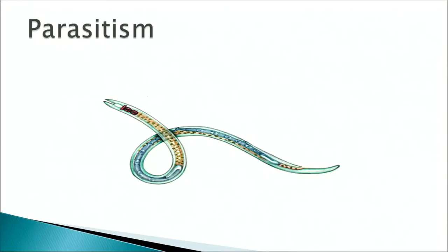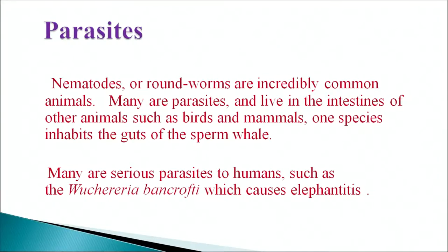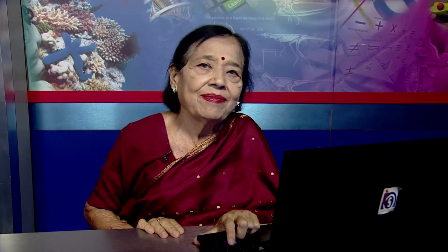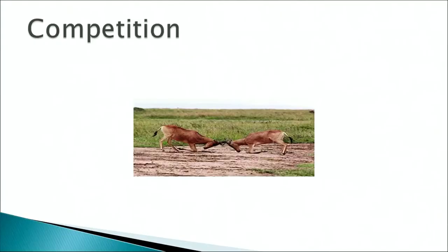Parasitism: parasites such as nematodes or roundworms are incredibly common animals. Many are parasites and live in the intestines of other animals such as birds and mammals; one species inhabits the gut of the sperm whale. Many are serious parasites to humans, such as Wuchereria bancrofti which causes elephantiasis. Predation: in an ecosystem, predation is a biological interaction where a predator — an organism that is hunting — feeds on its prey, the organism that is attacked. The act of predation often results in the death of the prey and the eventual absorption of the prey's tissues through consumption.